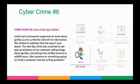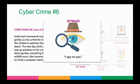Number six: the case of the spy catcher. Emily had an assignment to write about gorillas, so she searched the internet for information and clicked on websites she wasn't sure about. The next day, Emily was surprised to see pop-up windows on her computer selling things about gorillas — everything from stuffed animals to wildlife tours. Was something spying on Emily's computer? Most likely spyware. Emily went to a website she did not recognize, and by clicking on something with embedded malware, that led to spyware with someone actually watching what was going on her computer.